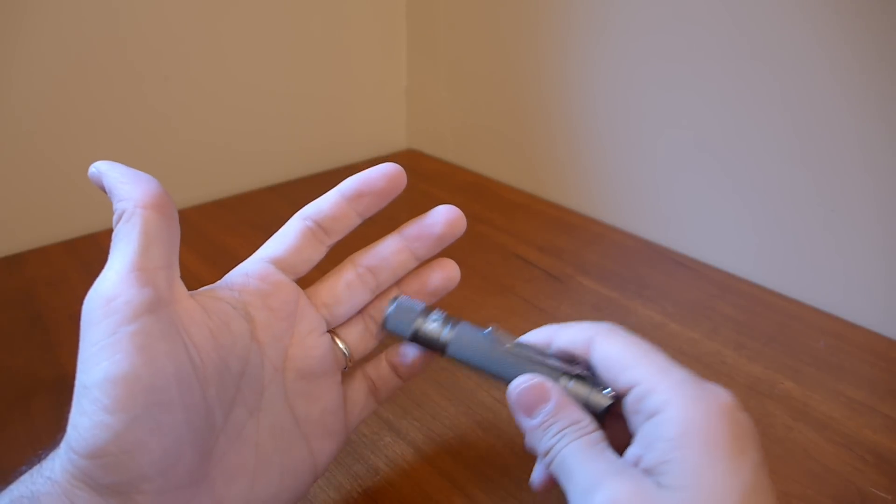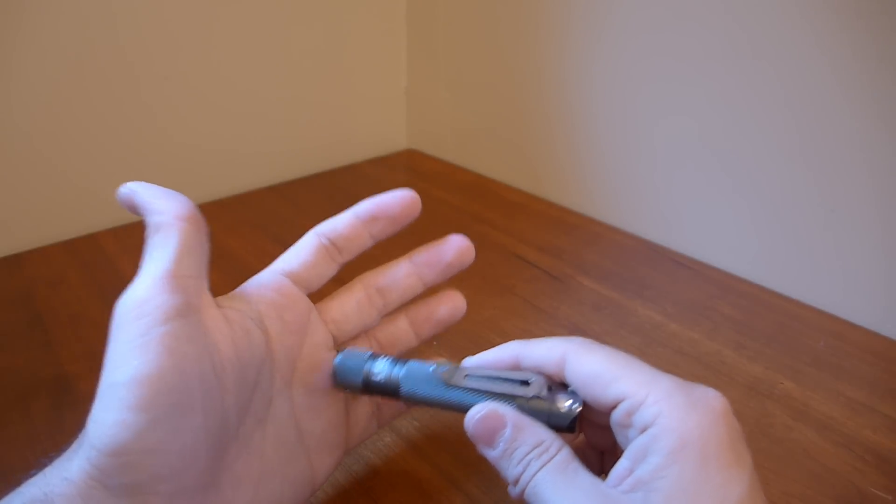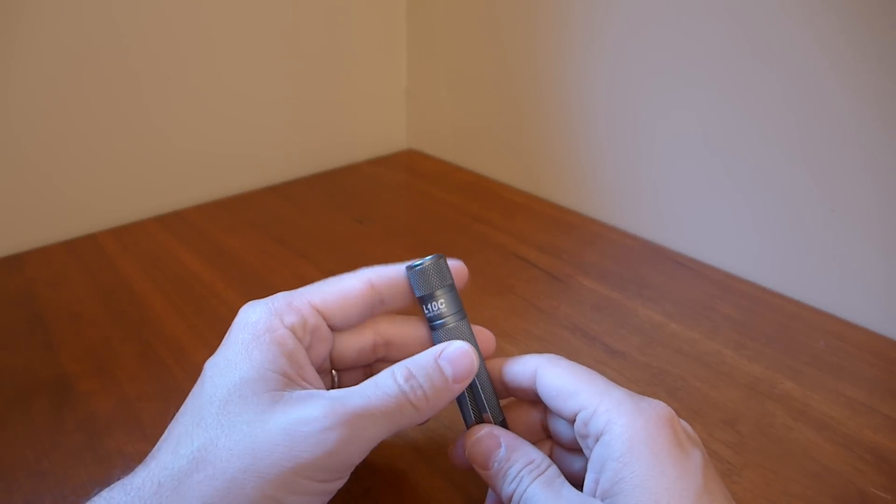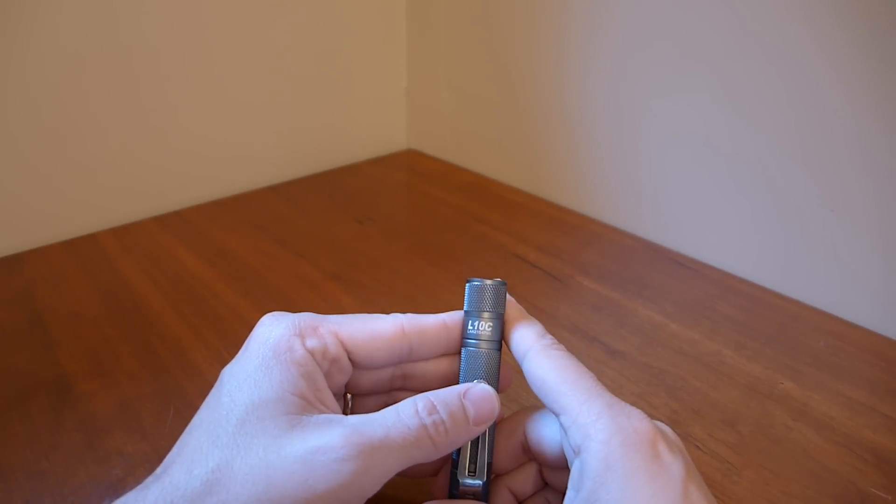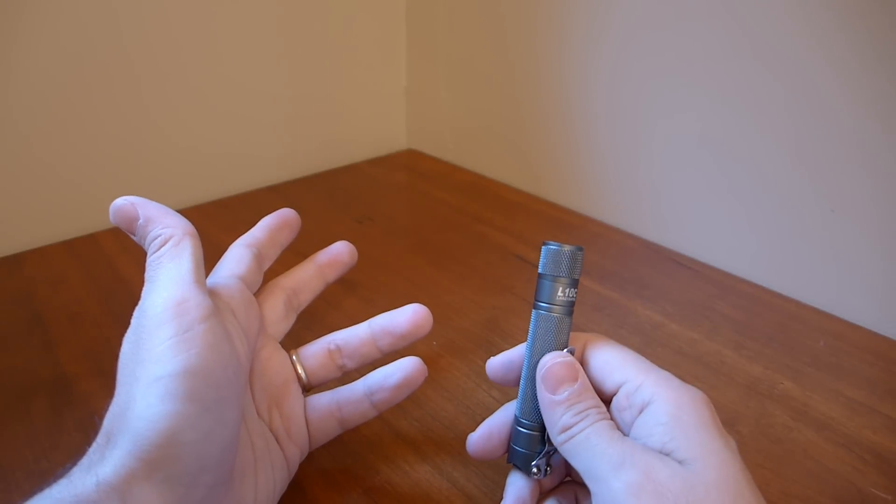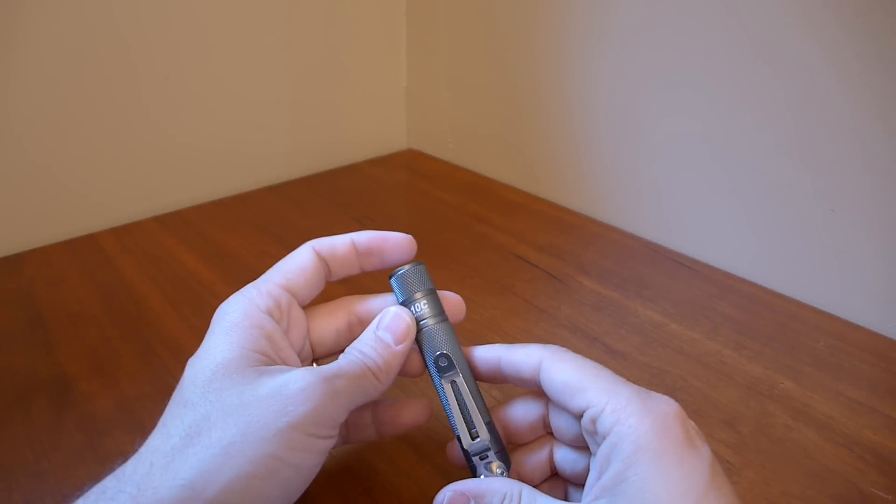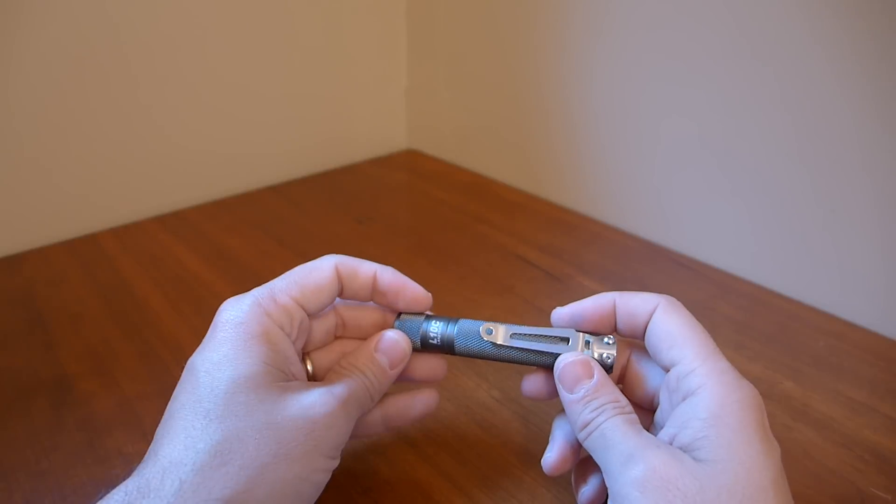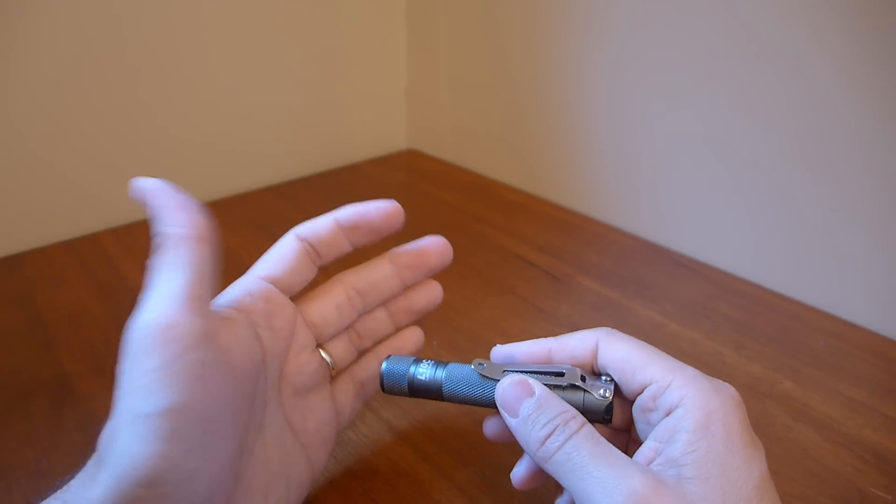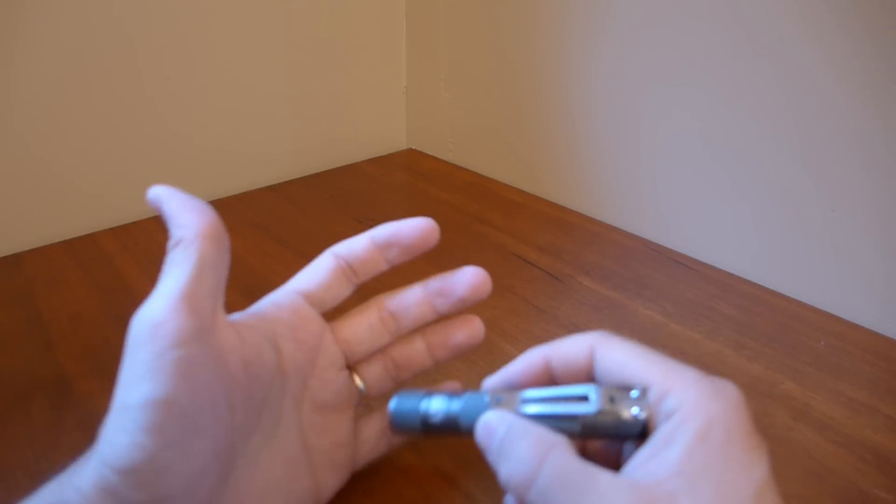The benefits of the Nichia 219 is that it gives you really good color rendering. The color rendering is basically a comparison of the quality of light when you're measuring it up against something like daylight, so on the CRI scale, the color rendering index scale, sunlight scores 100, and the Nichia 219's output scores between a 92 and a 93. So it gives you very lifelike colors.